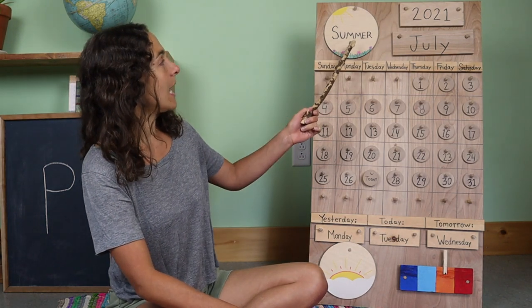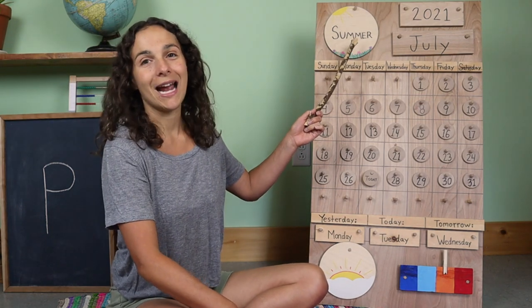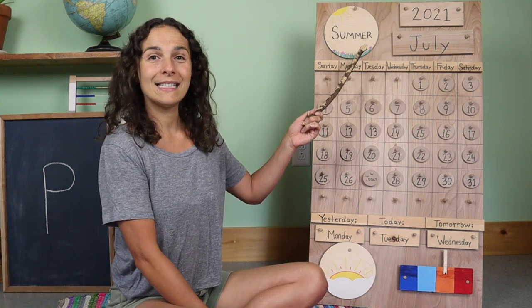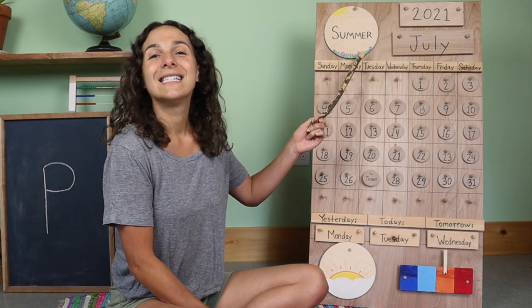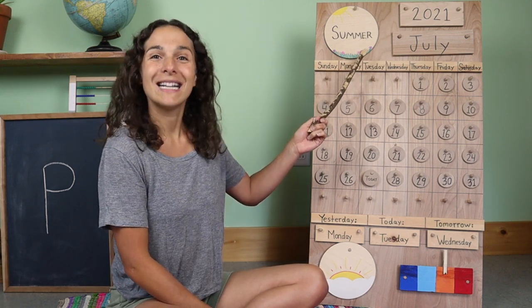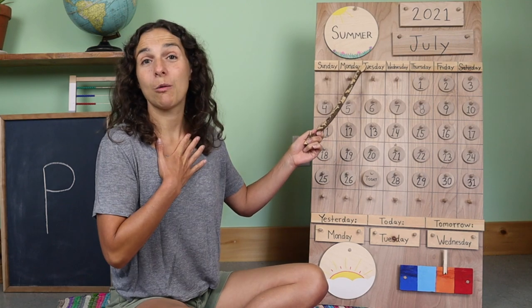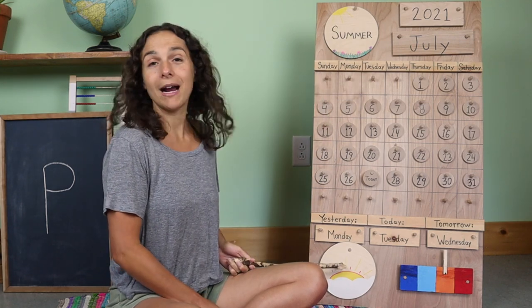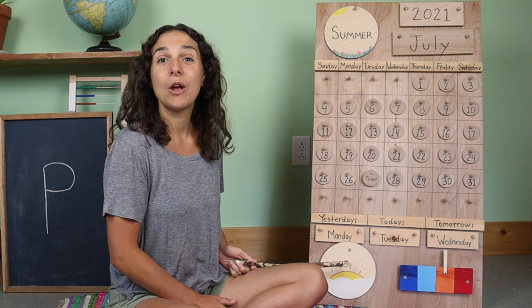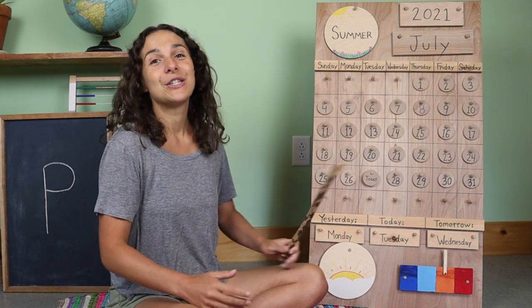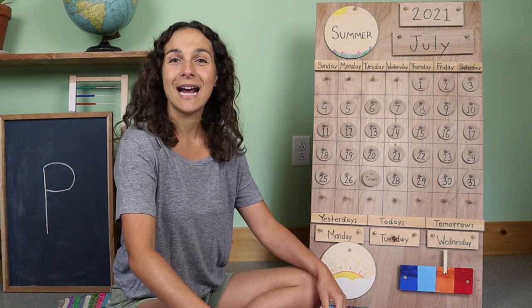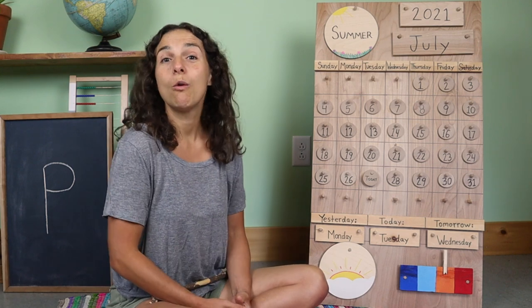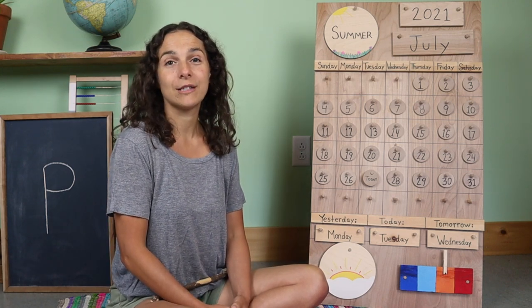And if we go back up to the top of the chart, we have the season. What's the season, friends? Summer. That's right, it's summertime where I live. And if we travel back down to the bottom of the chart, we have a picture of the weather. So it's time to sing the weather song together, and then we can share what we see outside of our windows.